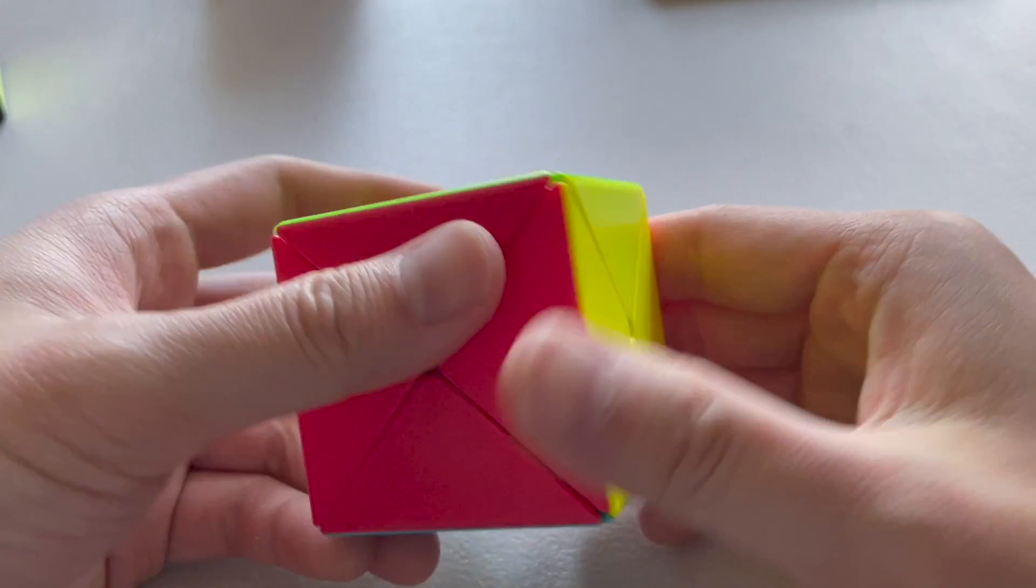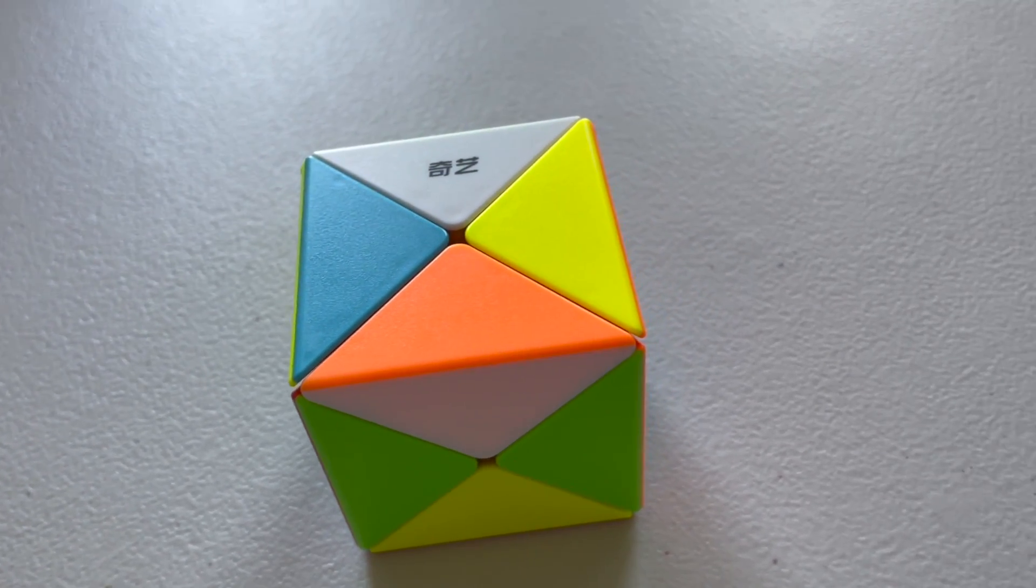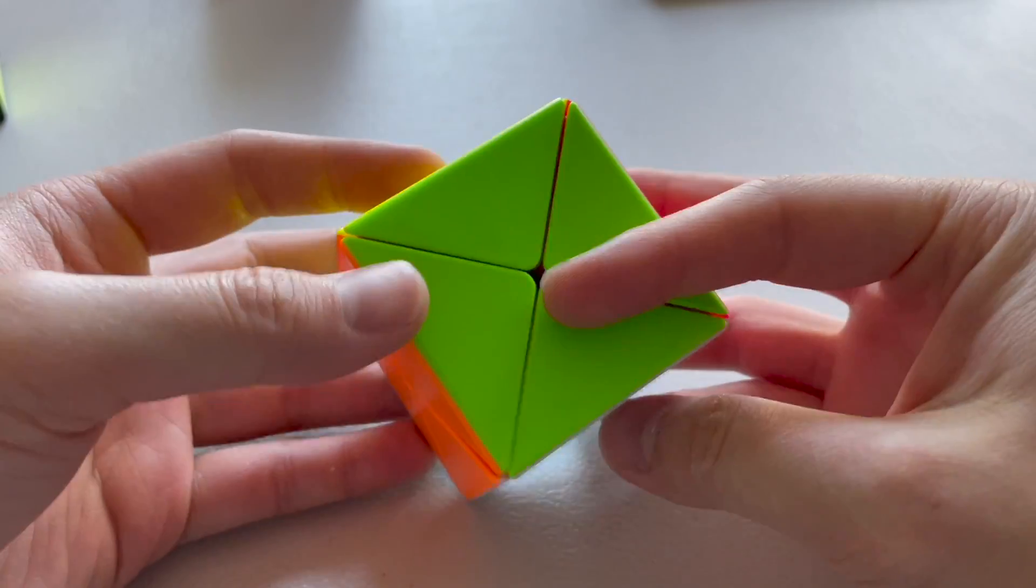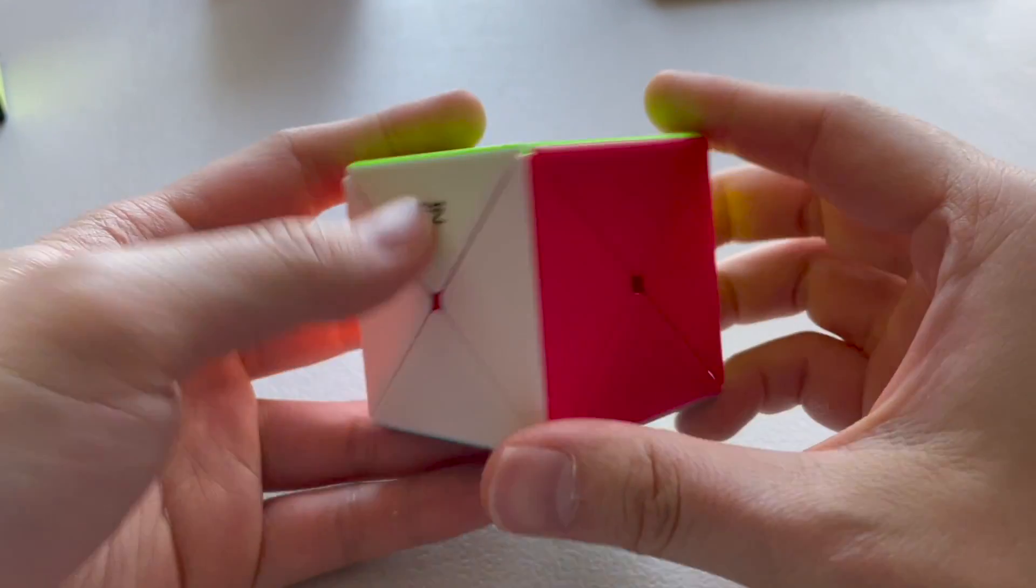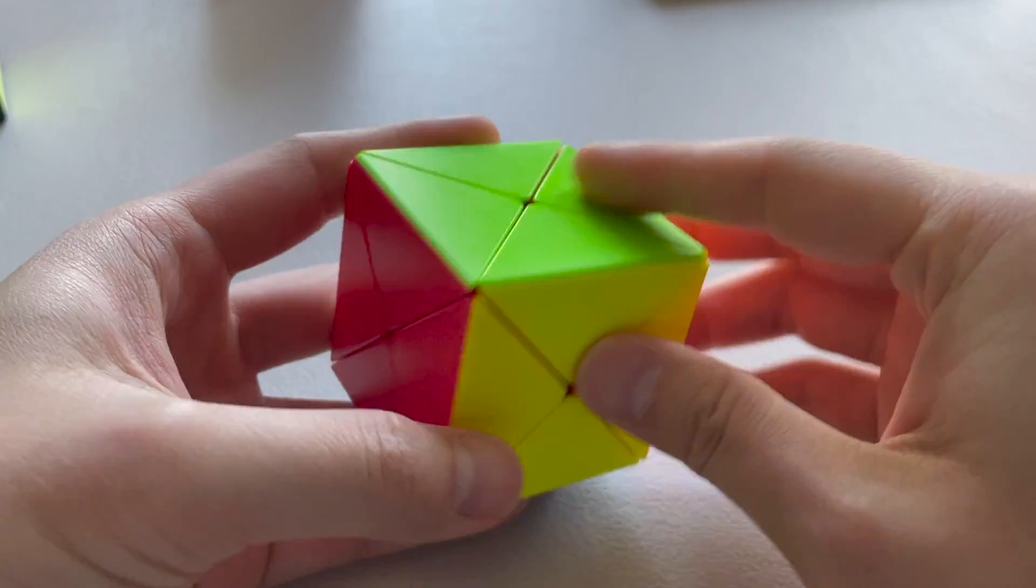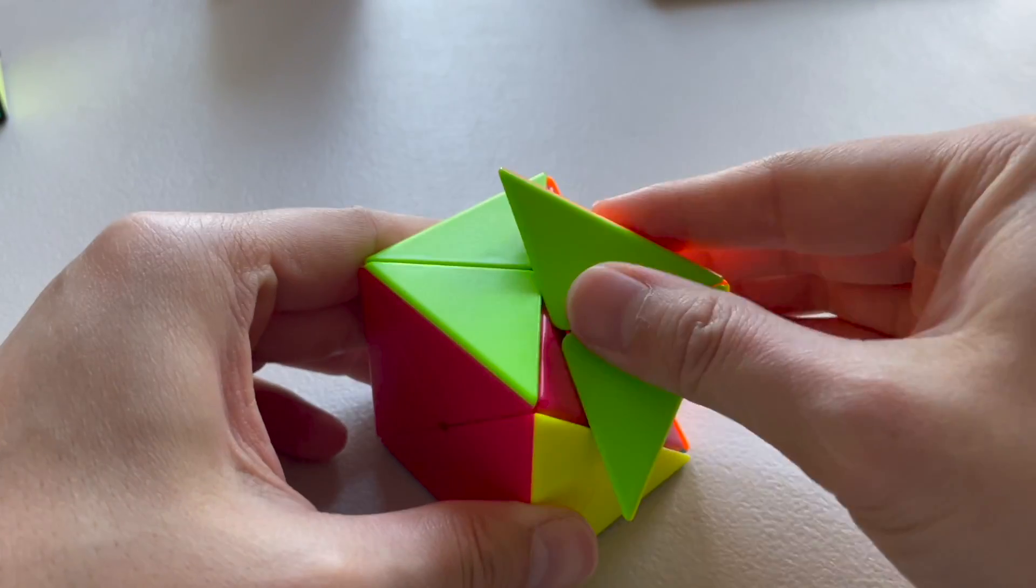Today we'll be looking at a dino cube. Dino cube doesn't have any dinosaurs on it but this is very similar to a redi cube if you know that, and the corners turn.